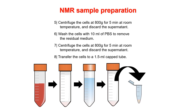You spin down the cells at 800 g for five minutes at room temperature and then discard the supernatant. You then have a pellet. Wash this pellet to remove traces of medium and trypsin with 10 mL of PBS, then spin down again for five minutes at room temperature and discard the supernatant. Finally you bring this falcon with the cell pellet to the NMR lab and transfer the cells into a 1.5 mL eppendorf tube.